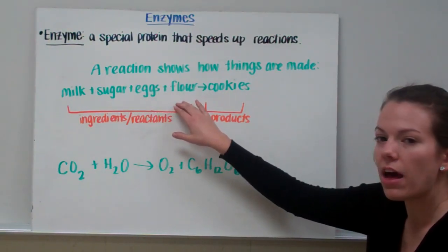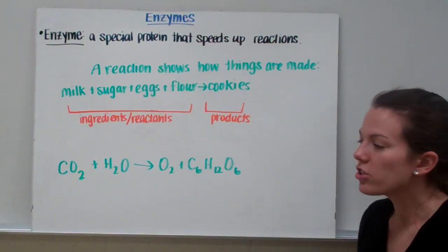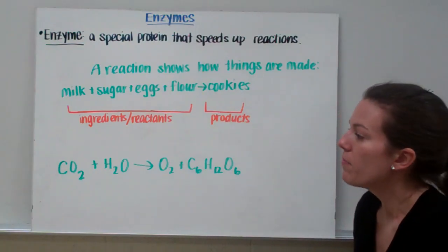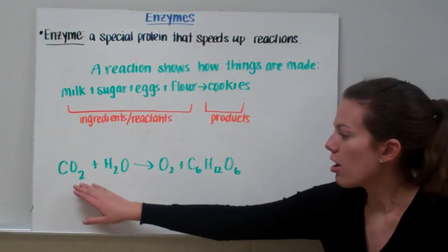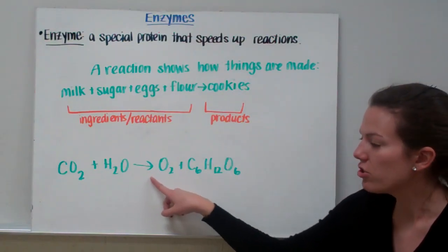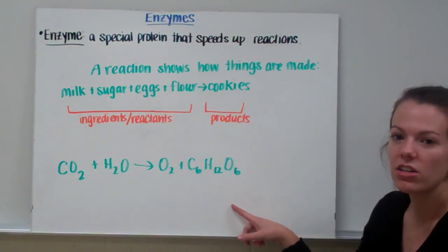So our ingredients were milk, sugar, eggs, and flour, and our products were the cookies. Let's look at another reaction. Photosynthesis is how plants get energy from the sun. Photosynthesis takes in carbon dioxide and water and mixes them together and changes them. That arrow shows that we're changing, and then we're making oxygen gas and sugar.